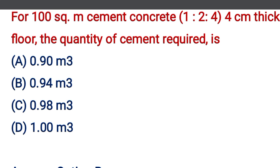For 100 square meter cement concrete 1:2:4, 4 cm thick floor, the quantity of cement required is — option A: 0.90 m³, option B: 0.94 m³, option C: 0.98 m³, option D: 1 m³. The correct answer is option B, 0.94 m³.